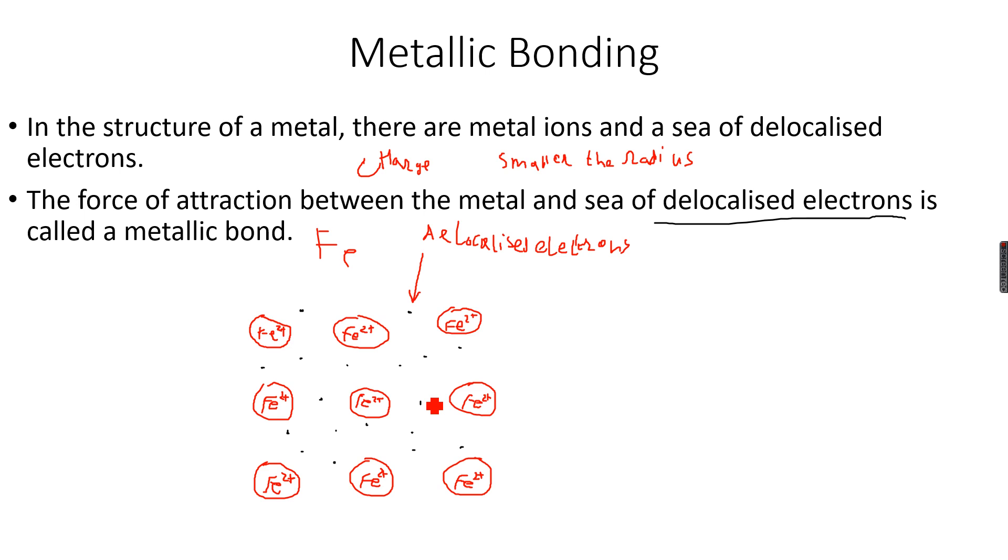Now, this is because if you remember, if you hammer an ionic compound, it will break. It's brittle. But if you hammer a metal, what happens is that these layers can slide over each other. As these layers slide over each other, the electrons move along with them. So the metallic bonds are not broken, and therefore the metals are malleable.